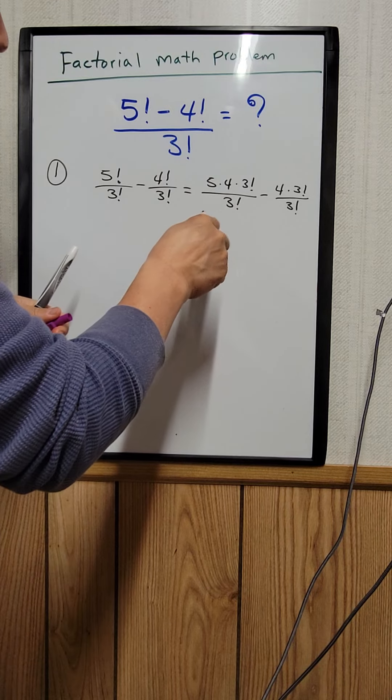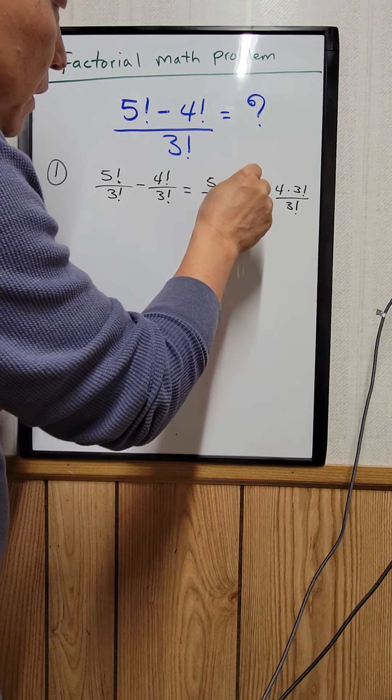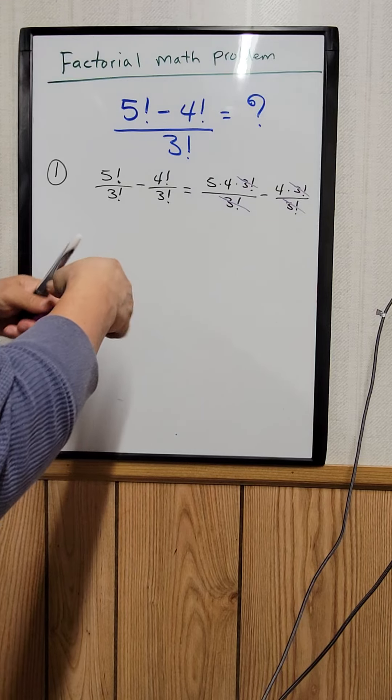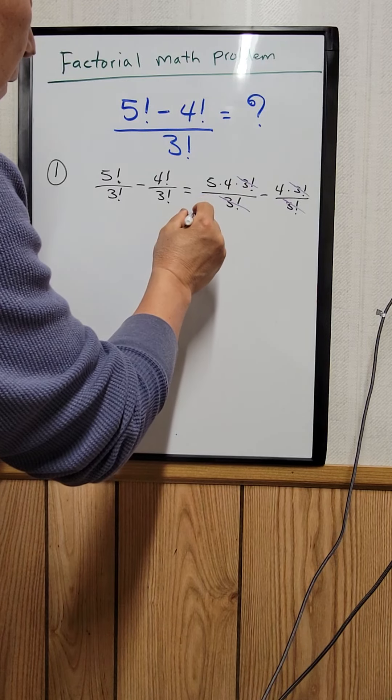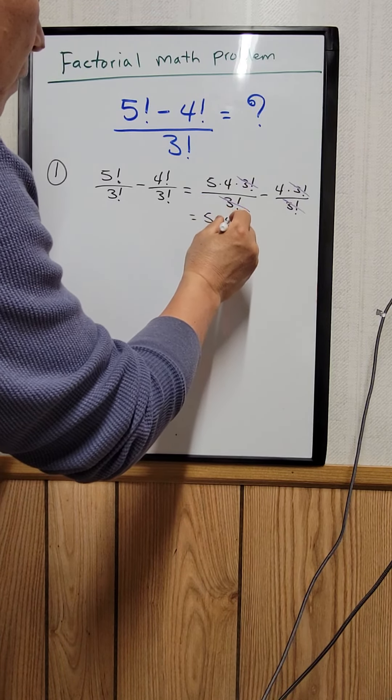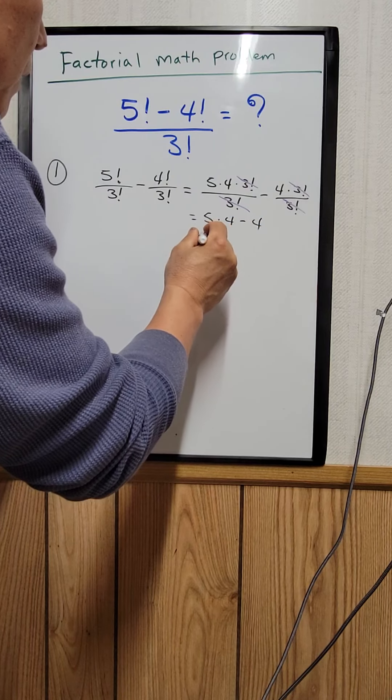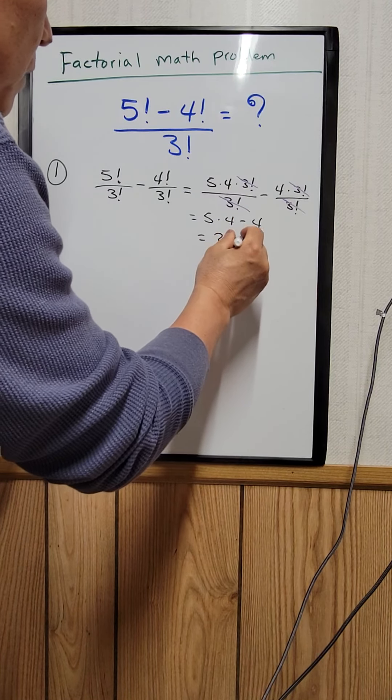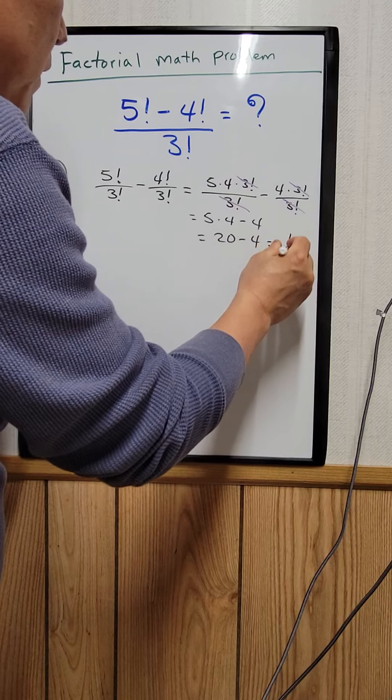The 3 factorial terms cancel out, leaving 5 times 4 minus 4. 5 times 4 is 20, and 20 minus 4 equals 16. That's your answer.